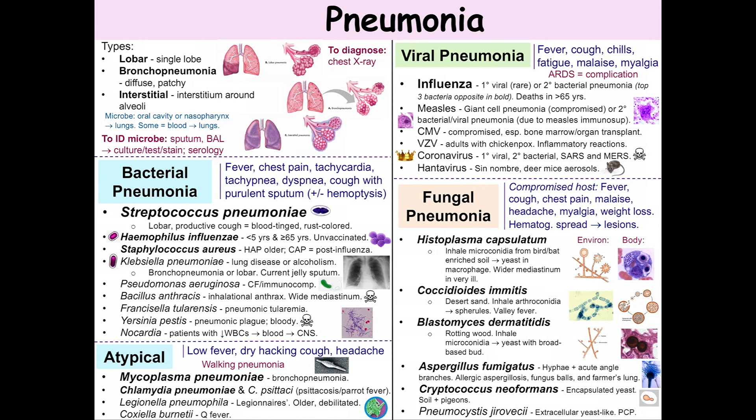Really, the gold standard for pneumonia diagnosis is a chest X-ray. The clinical manifestations of bacterial pneumonia involve a sudden fever, chest pain, rapid heartbeat, rapid breathing, shortness of breath, a productive cough — that's a cough with sputum — plus or minus hemoptysis, or blood.